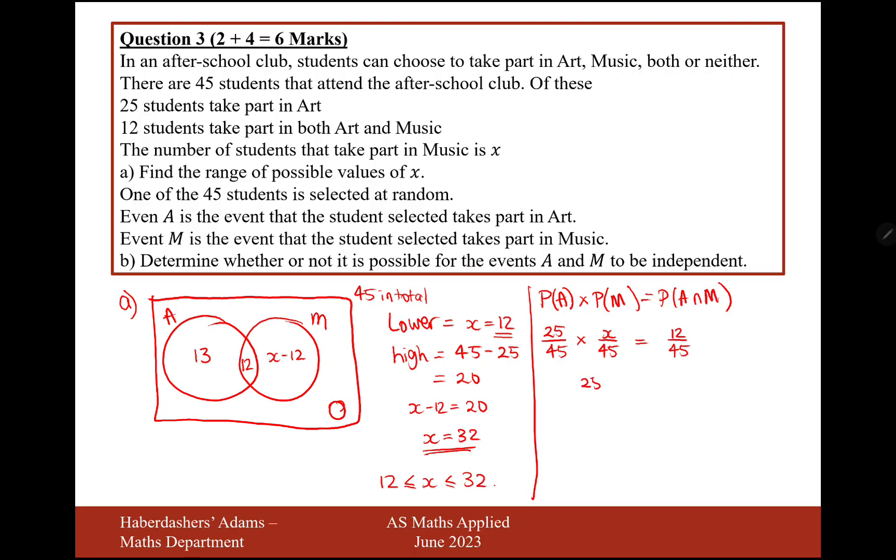So let's multiply our fractions on the left-hand side together. So it's 25x equals 45 times 45, just doing it on the calculator now.